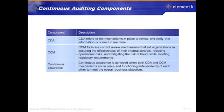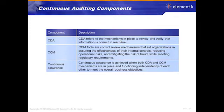For continuous auditing components, we have continuous data assurance, CDA — mechanisms to review and verify that we have correct information, able to confirm in real time that information is correct. Then there's continuous control monitoring: mechanisms that assure internal controls are doing their job, helping reduce or mitigate the risk of fraud and other threats while meeting regulatory requirements. We continuously monitor data and controls. This gives us continuous assurance that, when both are functioning independently, we are meeting our overall business objectives.